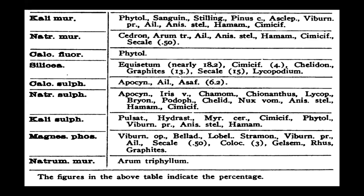People say we are not scientific because we don't have such data. We need to show the world we are scientific. Silica is present in Equisetum at nearly 18.2 percent — very important. In Cimicifuga it is four percent, in Chelidonium and Graphites 13 percent — that's why there is a close relationship. Secale Cor contains 15 percent Silica. Lycopodium also contains Silica in an unknown but significant percentage, and that is the reason why Lycopodium and Silica are very close to each other in every aspect.